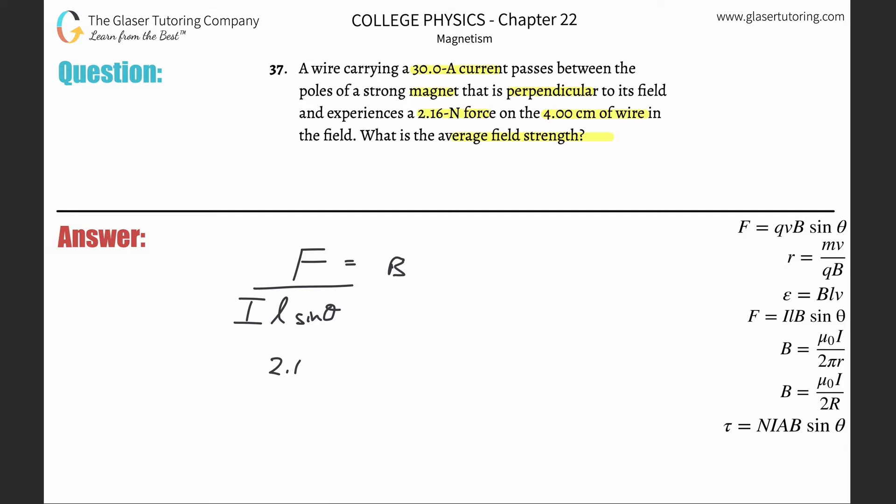What's the force? 2.16. What's the current? 30. What's the length? 4 centimeters. We need that in meters, so multiply by 10 to the minus 2 or move the decimal two places to the left. What's the angle? They told you perpendicular, so it's 90.